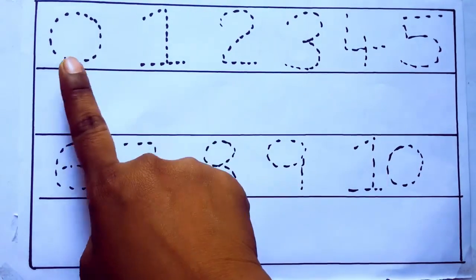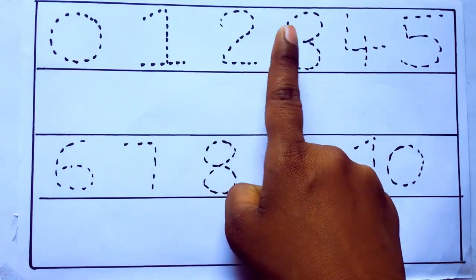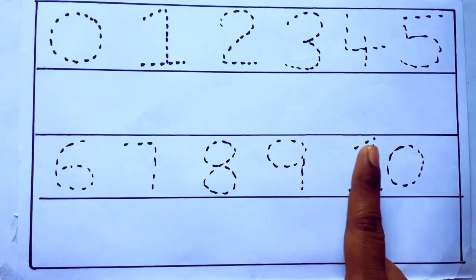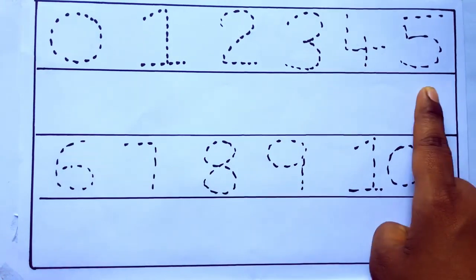0 to 10: 0, 1, 2, 3, 4, 5, 6, 7, 8, 9, 10 and rewriting the numbers.